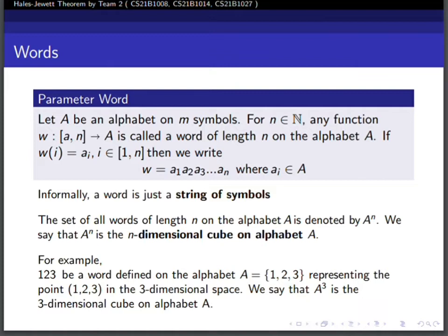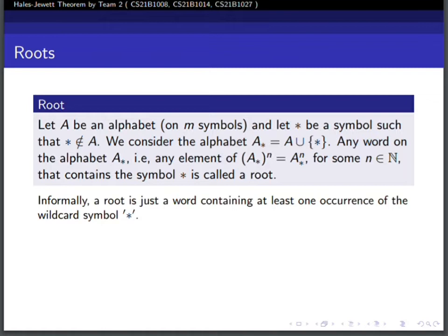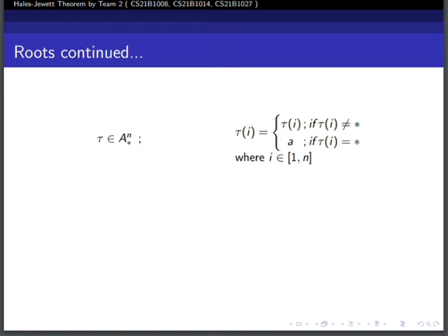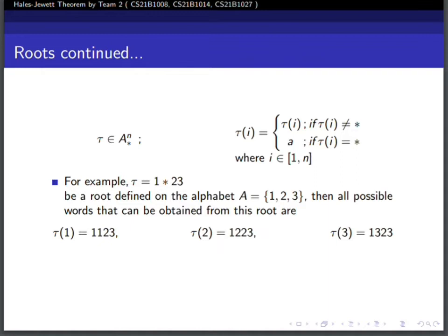A root is a word containing at least one wild character star, represented by the Greek letter tau. For example, let tau be a root defined as 1 star 2 3 on alphabet A. Then all possible words from this root are 1 1 2 3, 1 2 2 3, and 1 3 2 3.